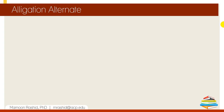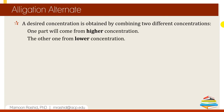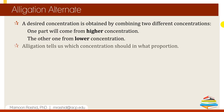Allegation Alternate. In pharmacy, we may need to dispense a desired concentration of a drug from two different concentrations. One of the concentrations should come from a higher concentration than what we desire, and the other from a lower concentration. Allegation is the method which tells us how much to take from the higher concentration and how much from the lower concentration.